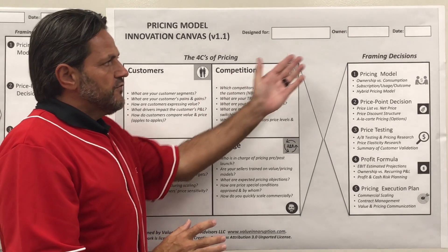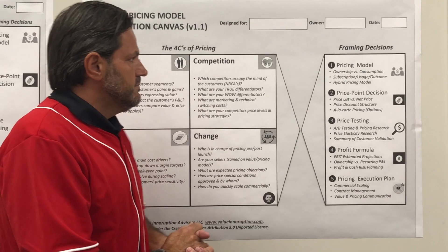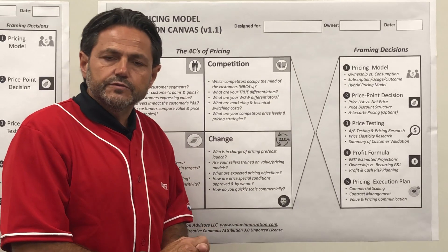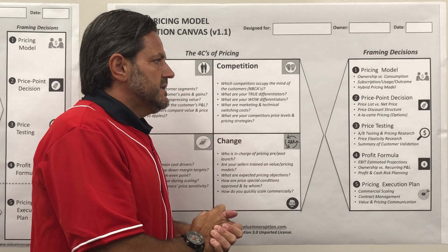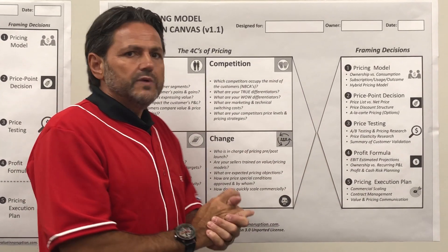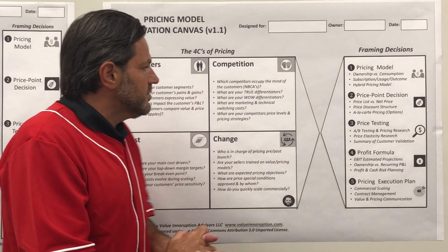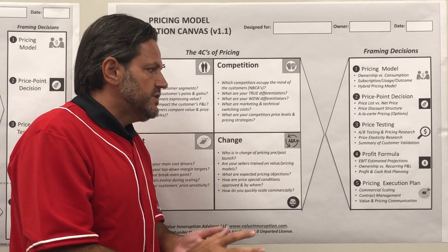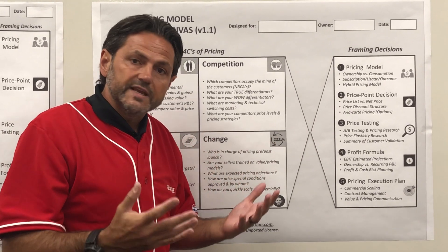At the end of the day, we're framing your offer by providing the answers to pricing and value management. On the pricing model side, do I use an ownership or a consumption model? Do I use a blend of subscription, usage, and outcome-based pricing, or do I mix all of this and create a hybrid model? On the price decision side, do I go price list or net price, what's my discount structure, do I do à la carte pricing for some of the options and features of my digital offer or new product or services? What kind of testing do I do before and after launch — A-B testing, pricing research, price elasticity research — and then looking at the summary of customer validation of all your testing work.